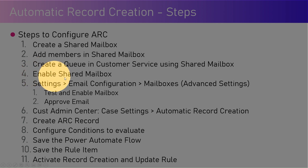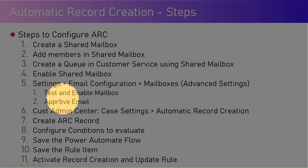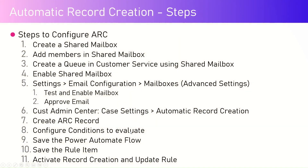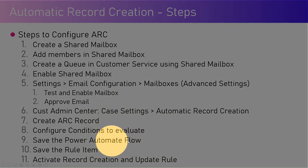Next, you enable the shared mailbox by going into the backend interface — Advanced Settings — and test and enable the mailbox, approve the email. Then go to Customer Service Admin Center, under Case Settings and Automatic Record Creation, and create the ARC record. This gives you an interface to provision evaluation conditions, such as 'if the email subject contains ticket, then create the case.' It's also tightly linked to a Power Automate flow — you validate the connections, save the rule item, and activate the record creation and update rule.